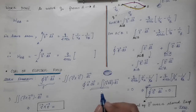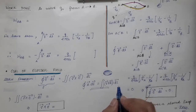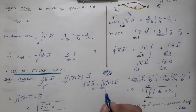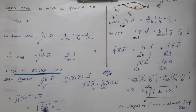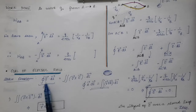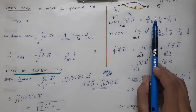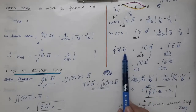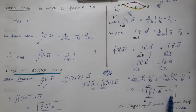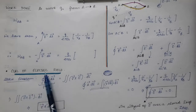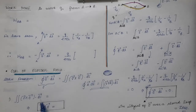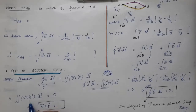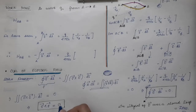Stokes' theorem is valid for every vector field. Here we are considering the electric field vector E. So we write Stokes' theorem for the electric field: the line integral of E over a closed loop equals the surface integral of curl of E dot dS, over the surface enclosed by the loop.